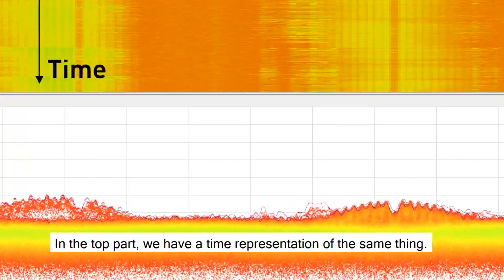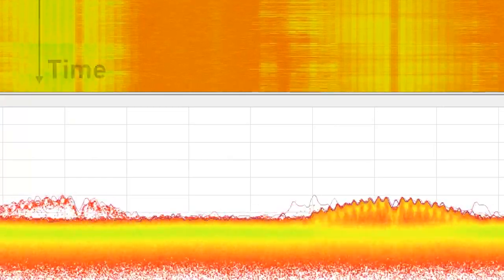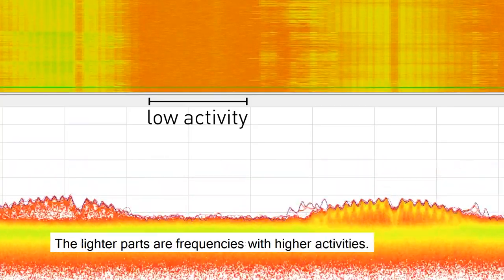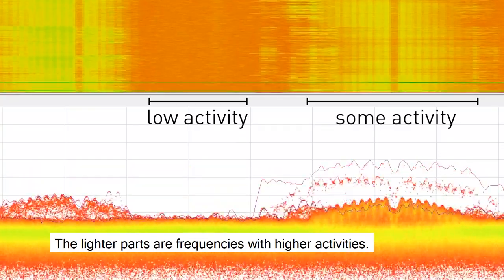In the top part, we have a time representation of the same thing. The orange part in the middle represents frequencies with low activity. The lower part, higher frequencies with higher activities.